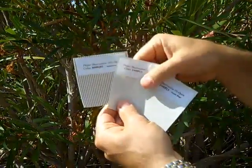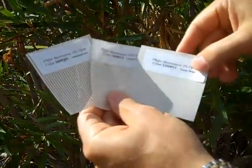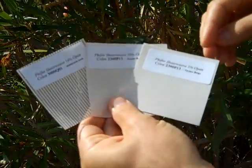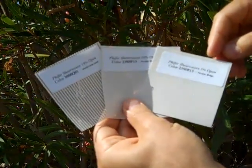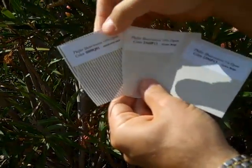They all use the same solar screen material. These are three swatch examples, and they come in a variety of opacities, or what they call openness factors. These are 5%, 10%, and 14%.